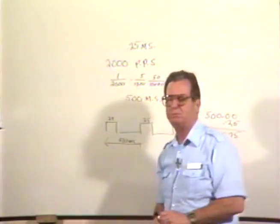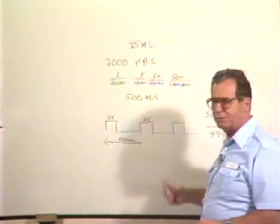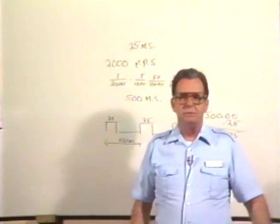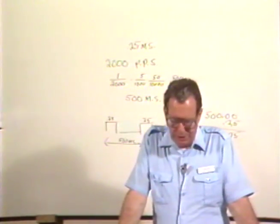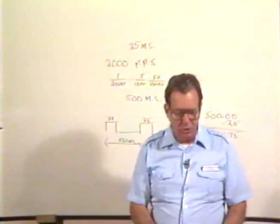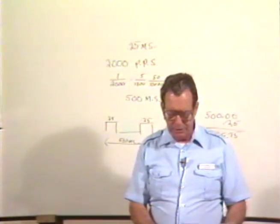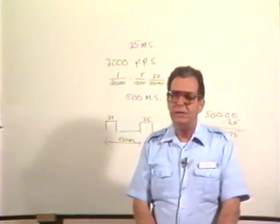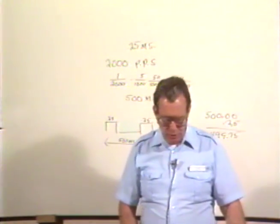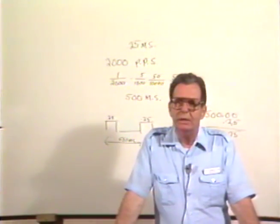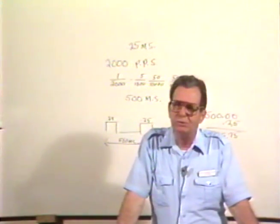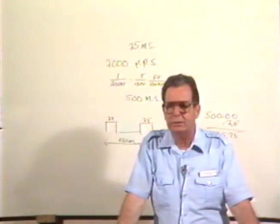It is important that you know this because it will tell you a good many things about what can happen with your radar set. Interference is something you're going to see from time to time, and it's usually caused by another vessel in the area transmitting a signal at the same time your radar is on. You will usually pick up radial lines — curved spiral lines composed of dots. There's a picture of them on page 49.